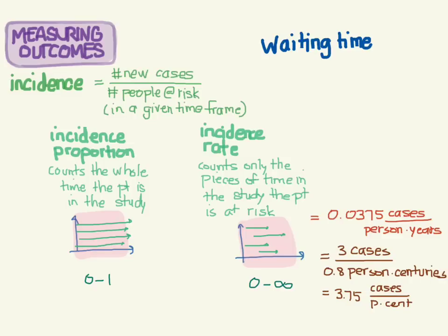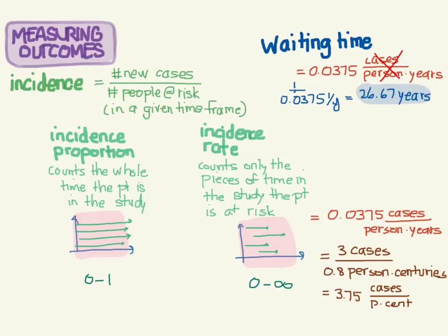The other thing we should talk about is something called the waiting time. Let's take our incidence again. Technically, a case really is a person, so these two units can actually cancel out, and you're just left with years in the denominator. So the units of this thing would be 1 over years. What if we took the inverse of that? We would get 1 over 0.0375 1 over years, which equals 26.67 years. And what this means is you have to wait, on average, 26.67 years to see one case of whatever it is you were looking for. In our previous example, death by cancer, we'd have to wait every 26 years you'd see someone die from cancer. This is also called the expectation of life or the survival time.